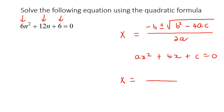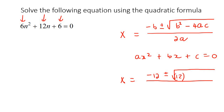So let's show you how the formula actually works. You go ahead and say negative, because there's a negative over there, and then 12, because b is 12. Then you say plus and minus, and then b again is 12, in brackets, and then minus 4. Now, a is 6 and c is also 6. And then at the bottom, you're going to have 2 times a, which is 6.